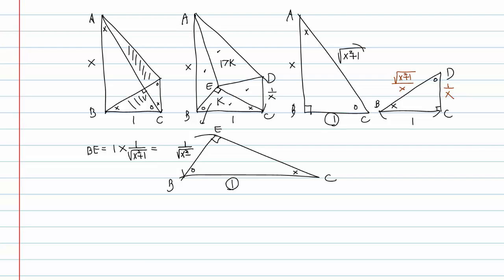What about EC? EC equals 1 times X over X squared plus 1, giving EC equals X over X squared plus 1.